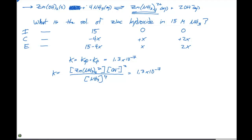We can now plug in our equilibrium concentrations in order to solve for x. In this particular case, our complex ion concentration is gonna be x. The concentration of OH minus is gonna be 2x, we need to square that. And the concentration of the ammonia is gonna be 15 minus 4x to the fourth power. This is gonna give 1.3 times 10 to the minus 7, which is our equilibrium constant for the overall reaction.